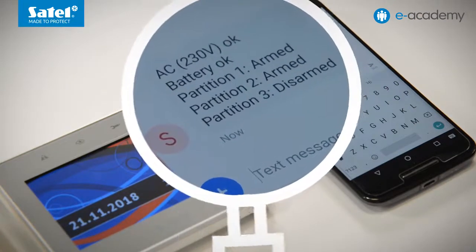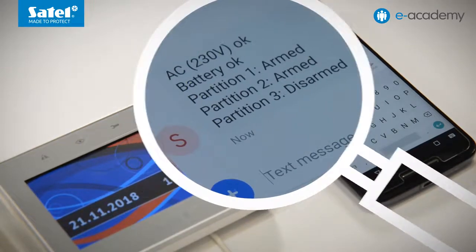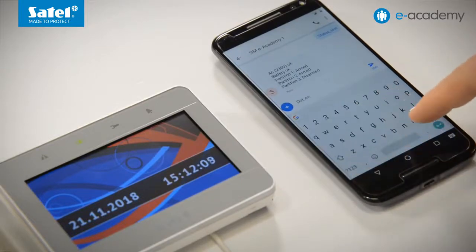OK, as you can see, only partitions 1 and 2 are armed, so partition 3 has been disarmed. Now I will use an SMS message to turn on the outputs to which our sirens are connected.